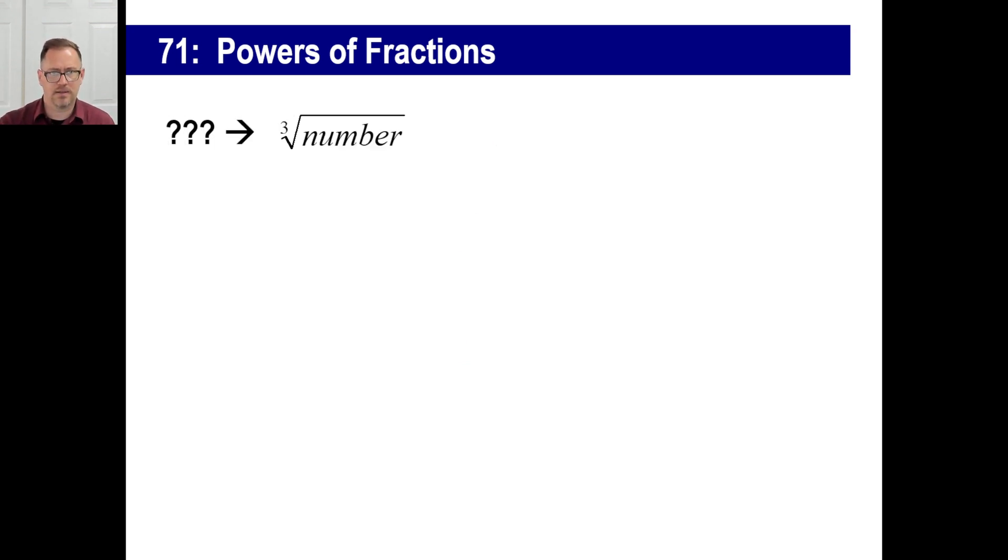Now, this right here, that looks like that's a radical, and that little three means that you're looking for some number times itself gives you the number, three times gives you the number underneath the radical. In other words, when you see something like this, you read this, you say, what is the cube root of...